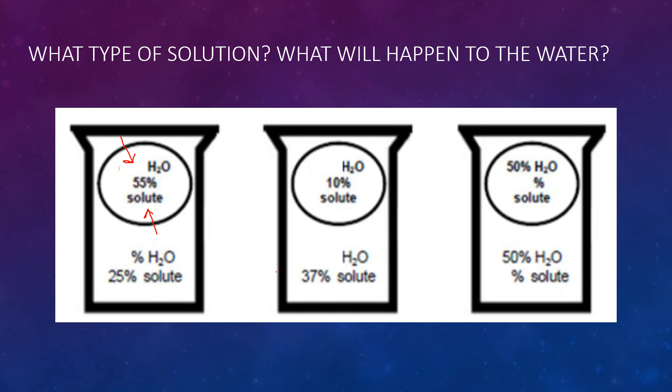The second one, we have more solute outside, so that water will move to the outside to try to dilute it. And this will cause it to shrink, so this is a hypertonic solution. And it will cause the cell to shrivel and shrink. This last one, 50% each side, it is in dynamic equilibrium. So water will move freely in and out of the cell at about equal rates.